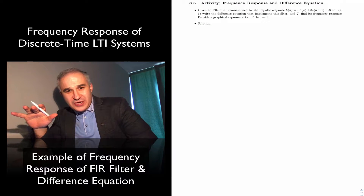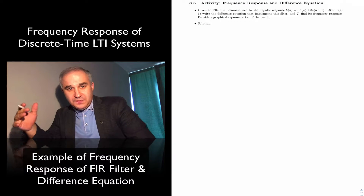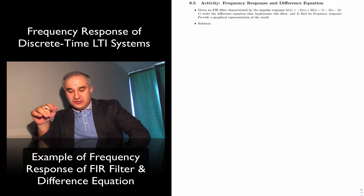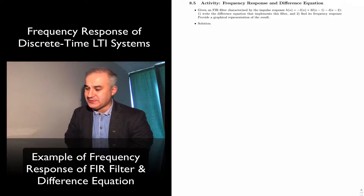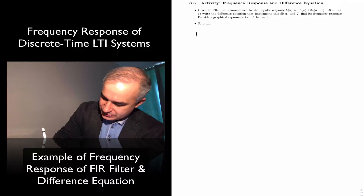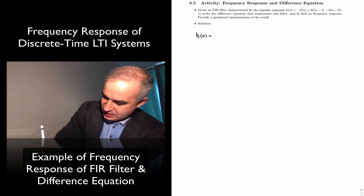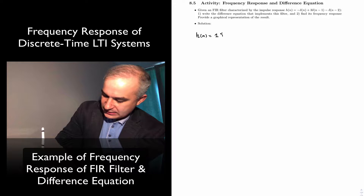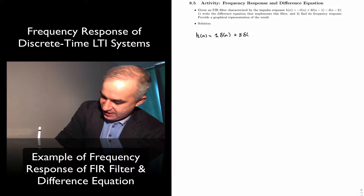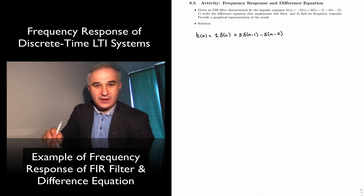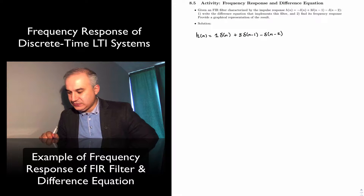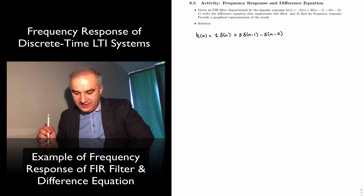Let's do another example of frequency response of FIR filters. In this case, we are given a filter characterized by a given impulse response. We have h(n) equals 1·δ(n) plus 3·δ(n−1) minus δ(n−2). This is the unit delta function, the discrete-time delta.